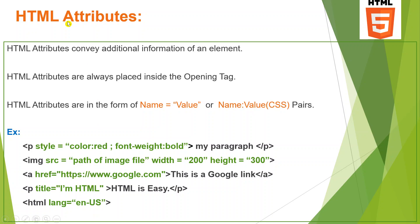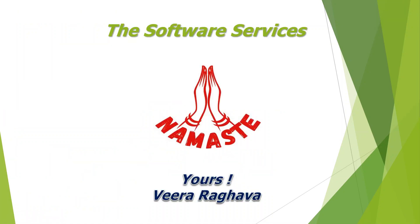In summary, attributes convey additional information beyond the basic functionality, so the browser understands: render this element as a paragraph, color this text red, and display this text as bold. That is the purpose of attributes. In the next class we will discuss more topics. Till then, bye bye — Vera signing off, thank you for listening.